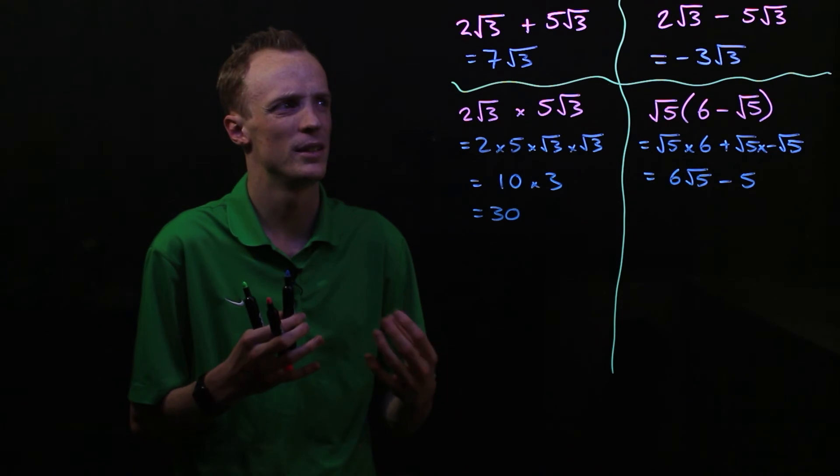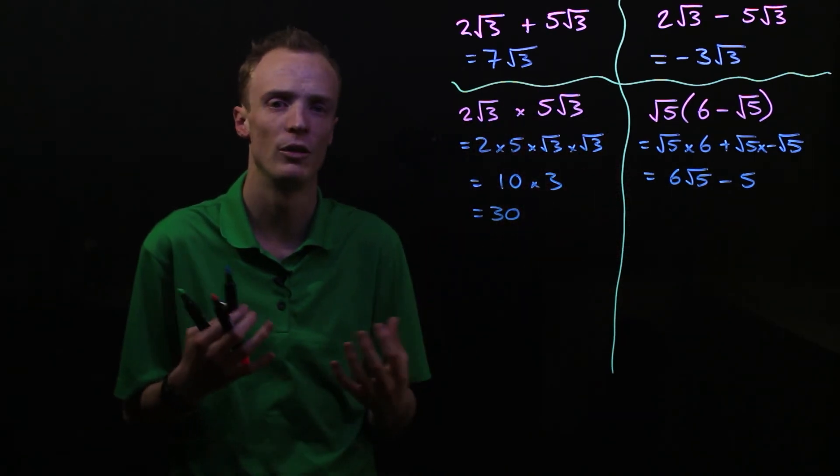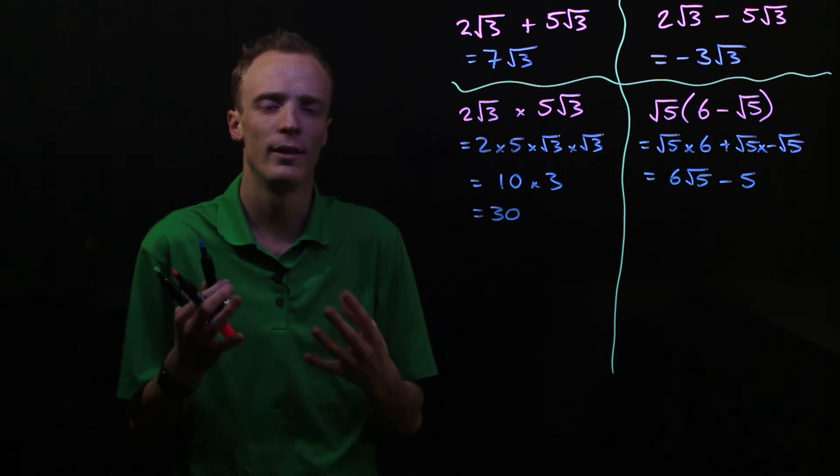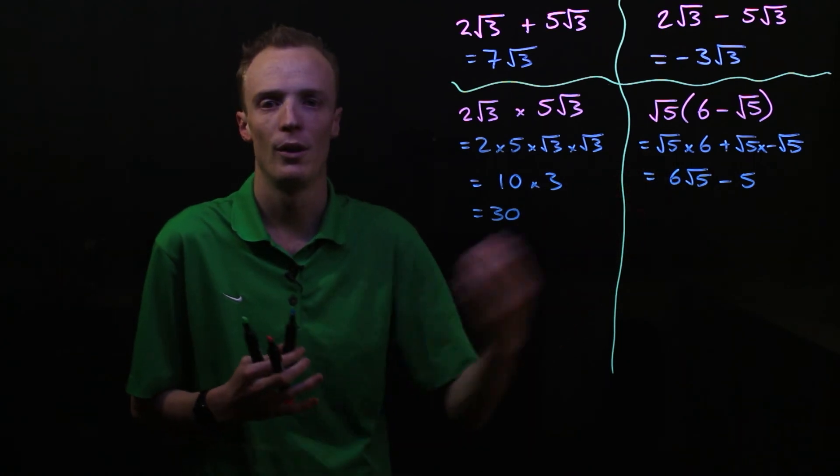So as you can begin to see, when we're using addition, subtraction, or multiplication of surds, we can use the same algebraic rules that we would use with variables.